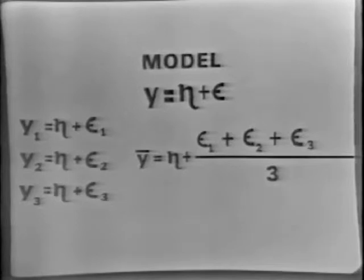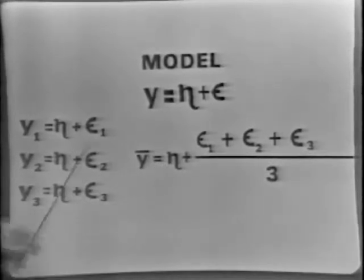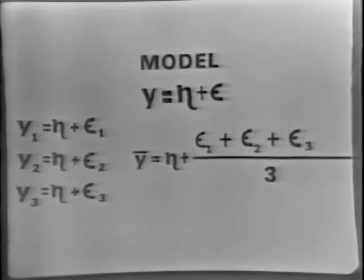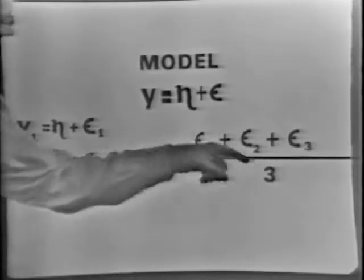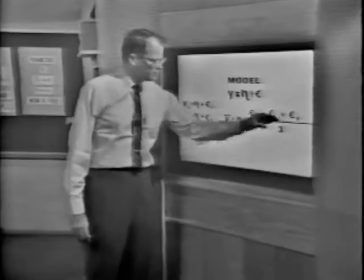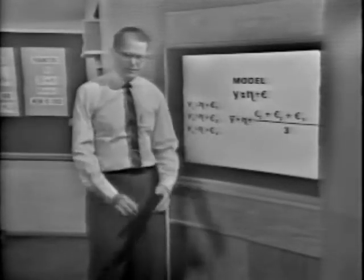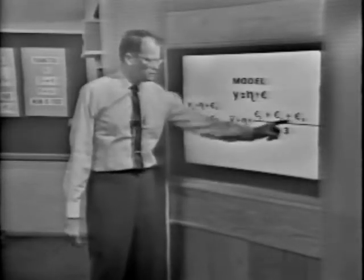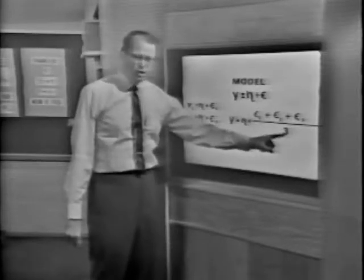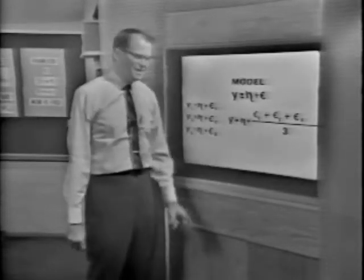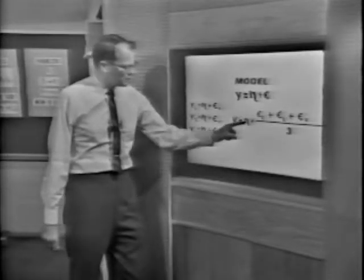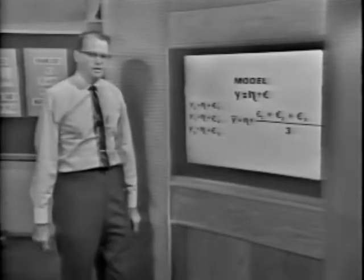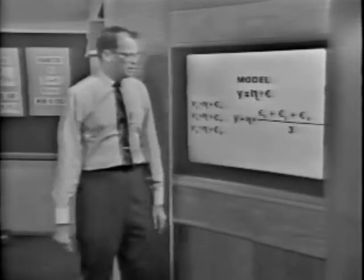Now let's compute the average. You'd sum these up and divide by 3. You have 3 eta divided by 3. Y-bar, the average, would equal eta plus the sum of epsilon 1, epsilon 2, epsilon 3 divided by 3. What's characteristic of these epsilons? Well, some are plus and some are minus, most are small and very few are large. As we sum them up, this quantity in the numerator will never get terribly large. And the number of observations entering this averaging process grows as n grows, so this disturbance gets less and less the larger n becomes. We say that y-bar is a statistic which estimates eta, and y-bar becomes a better and better estimate of eta as the number of observations increases.